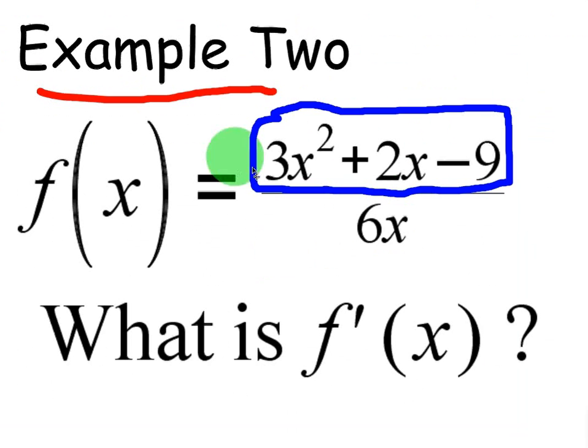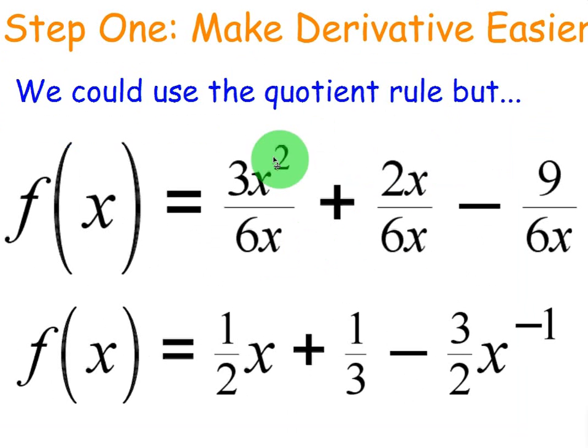Guess what, even though you have a power rule within a quotient rule, because you only have one term on the bottom it's going to be easier if you just take each component of the top and divide by the bottom. Because then you can just use the power rule, you don't have to worry about the quotient rule.